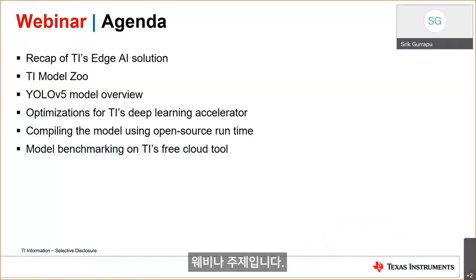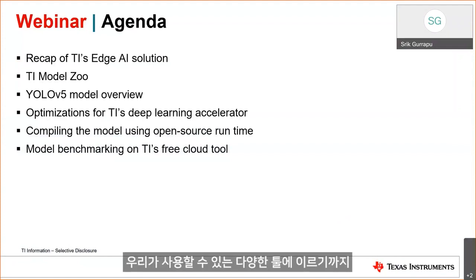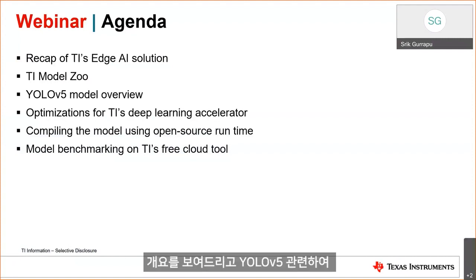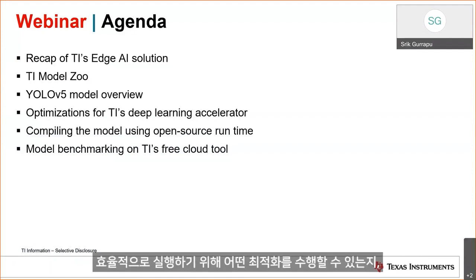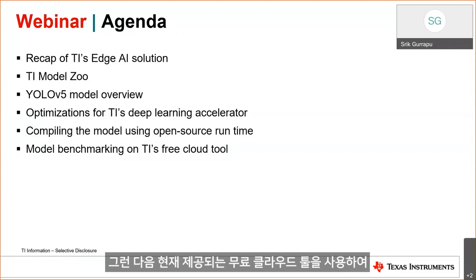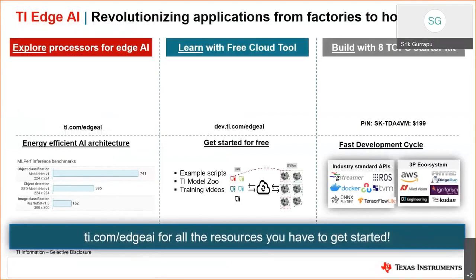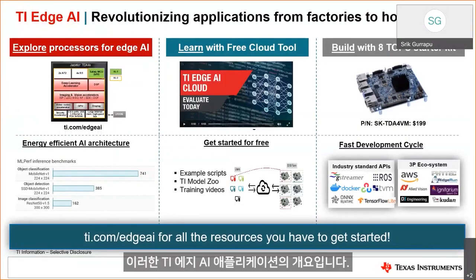The webinar agenda is: a quick recap of TI's HJI solution starting from the embedded processor to the different tools available, then an overview of the TI model zoo, then a deep dive into YOLO v5 — how the model works, what optimizations can make it run efficiently on the HJI platform leveraging our deep learning accelerator, and how to benchmark that model using our free cloud tool.